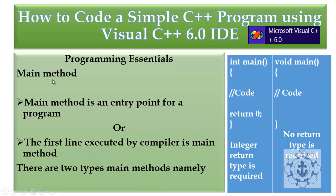Moving to the main method — the program execution starts inside the main method. There are two types of main method: integer main and void main. If it is an integer main, the return type is integer, so you must return an integer value. If it is a void main, there is no need to return a value.